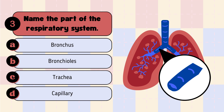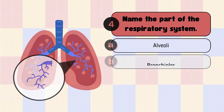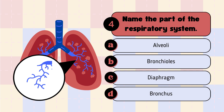Question 4: Name the path of the respiratory system. Look at the path highlighted and answer the question. A. Alveoli, B. Bronchiolus, C. Diaphragm, D. Bronchus.